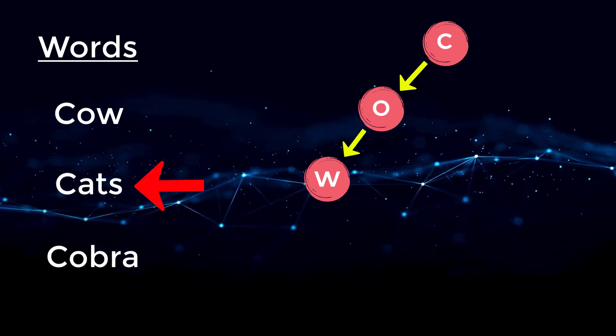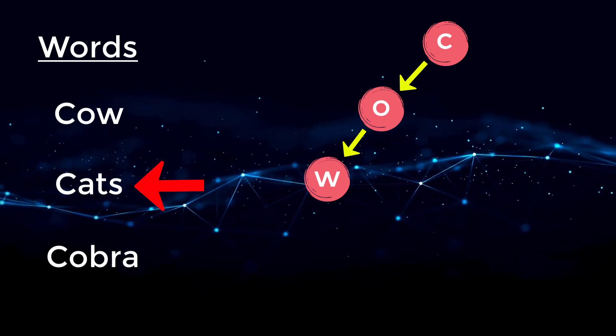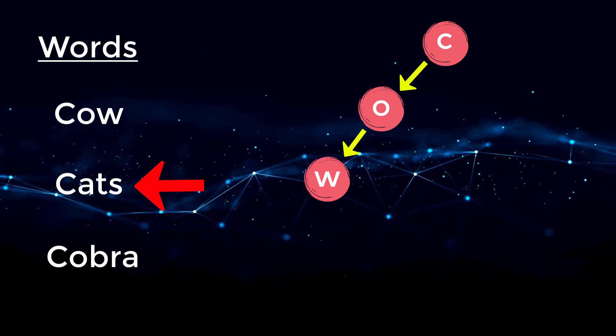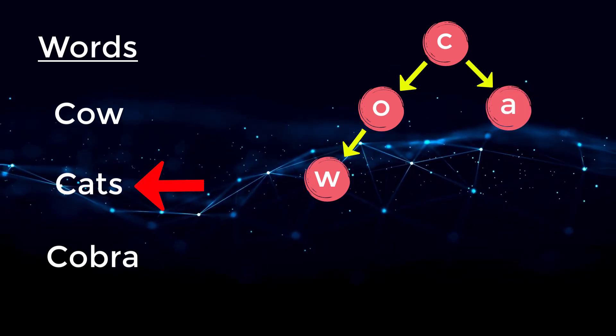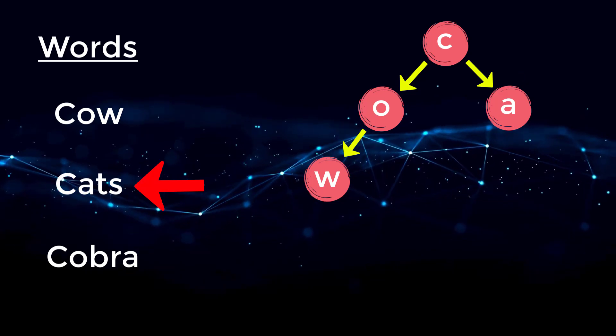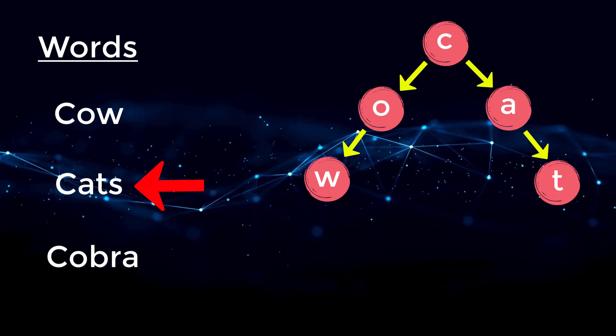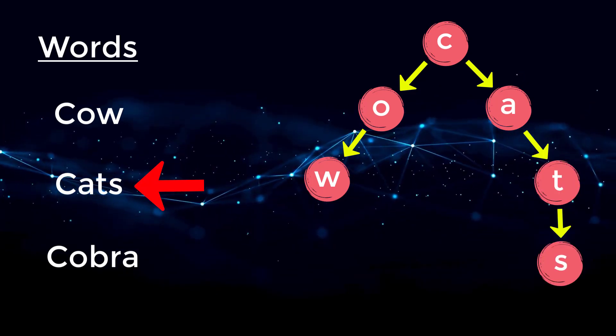And then we're going to do the same thing for the word cats. However, in this case, we already created a node for C, so we don't have to do it again. Then we move to character A, we create a node for A, connect it to C, create a node for T, connect it to A, and create a node for S, and connect it to T.